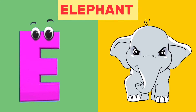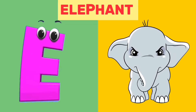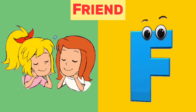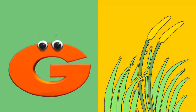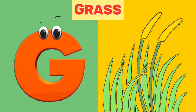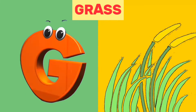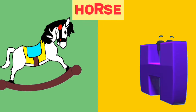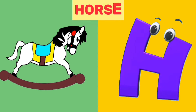E is for elephant. E, e, elephant. F is for friend. F, f, friend. G is for grass. G, g, grass. H is for horse. H, h, horse.